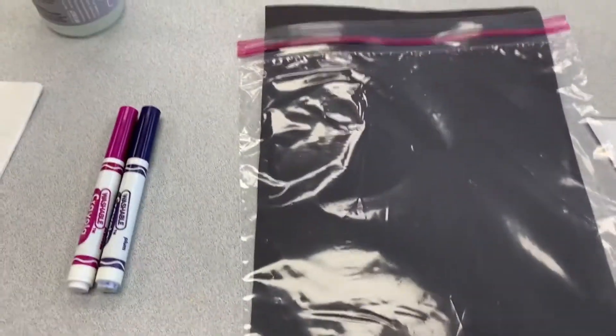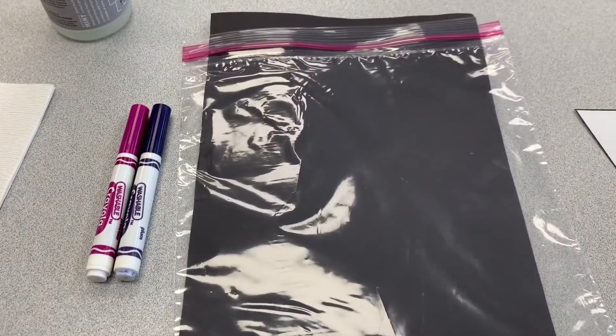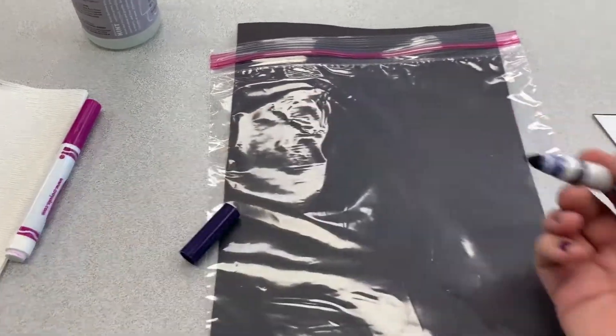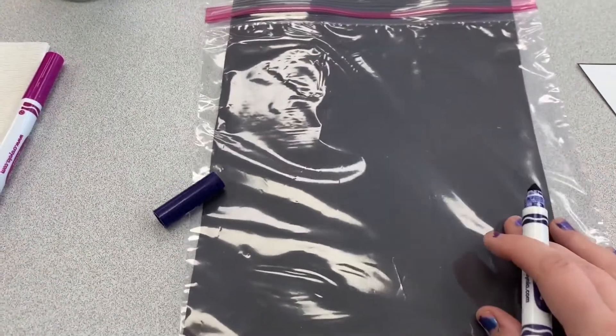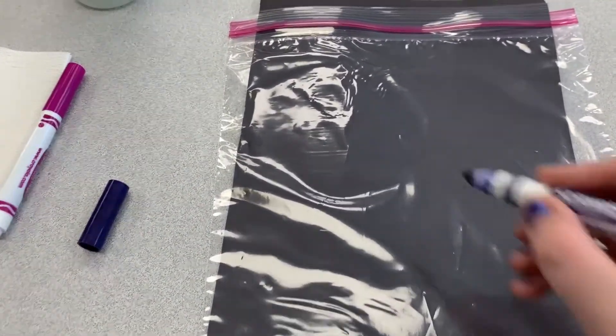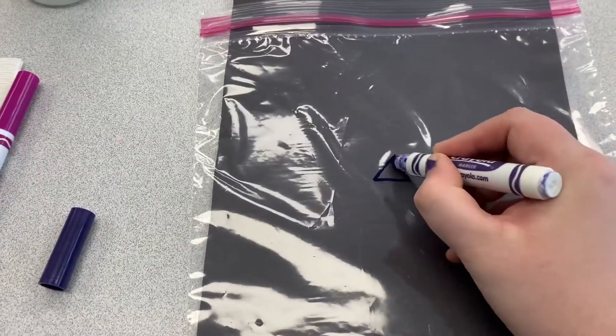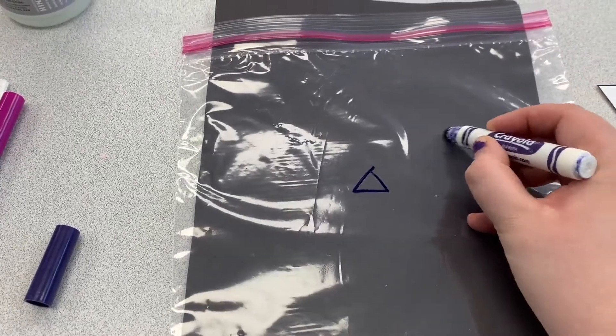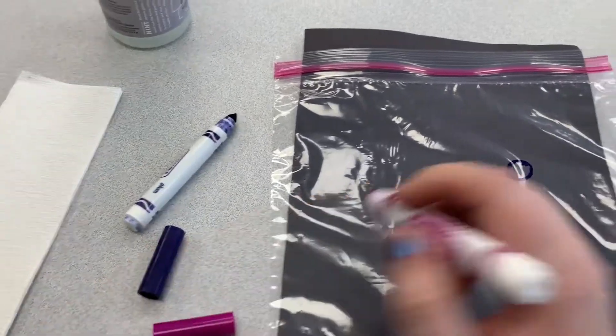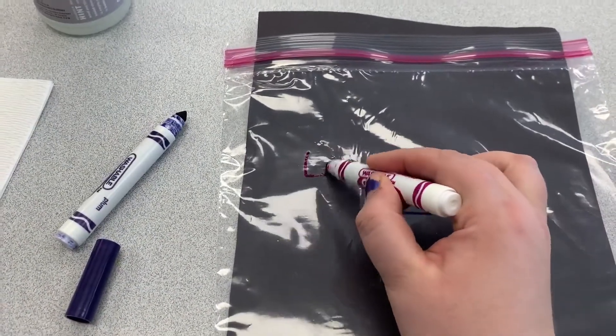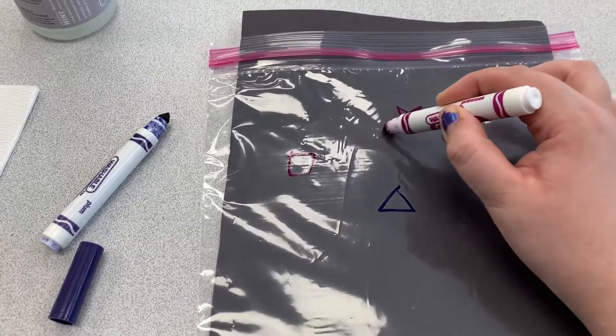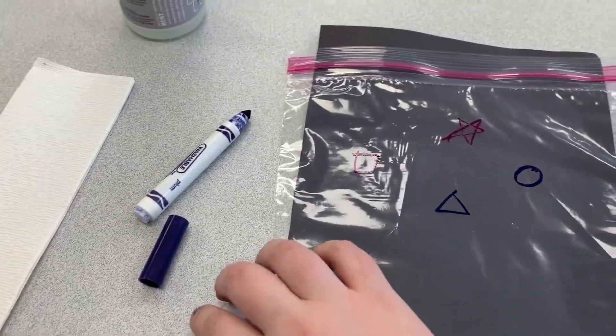So we're going to keep the black paper in our bag. Now, depending on your little, either you can do this next part or you can let them. And we're going to take our marker and we're going to draw on it. You can scribble, you can write your name, you can draw a tree. I'm going to do a couple of shapes here. Do a triangle and a circle. Let's make a square over here. And maybe a star. There. Okay.